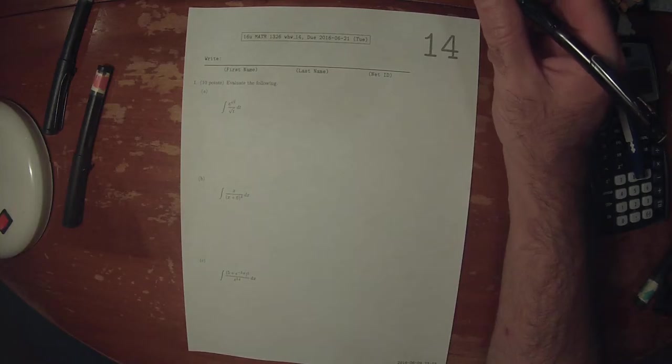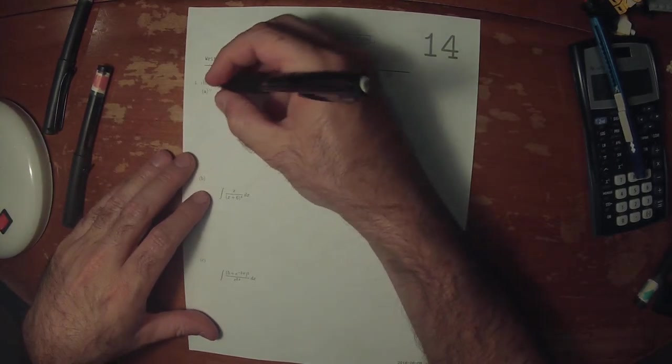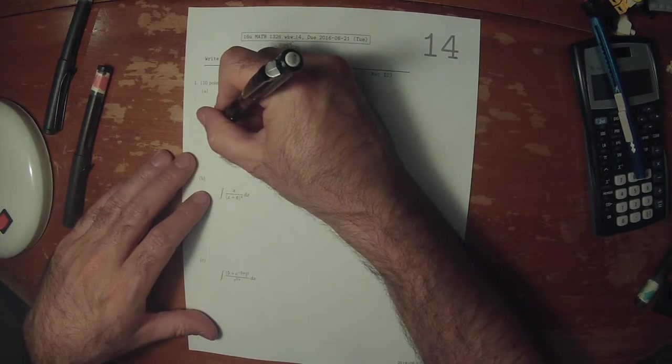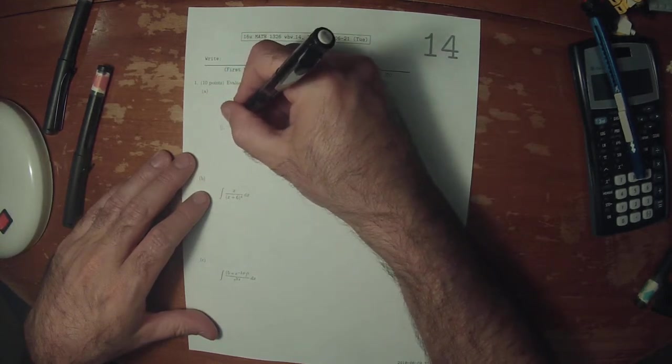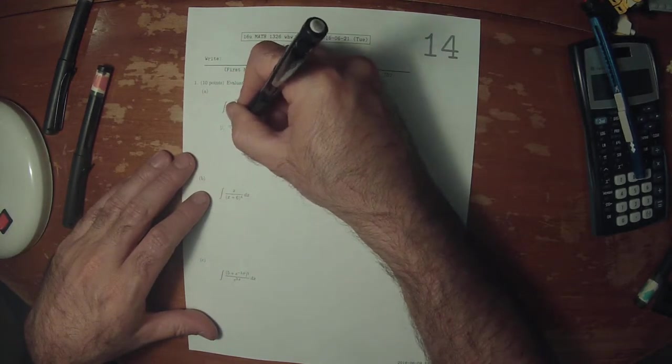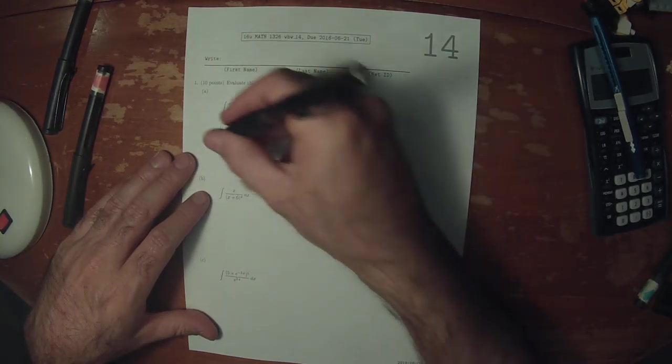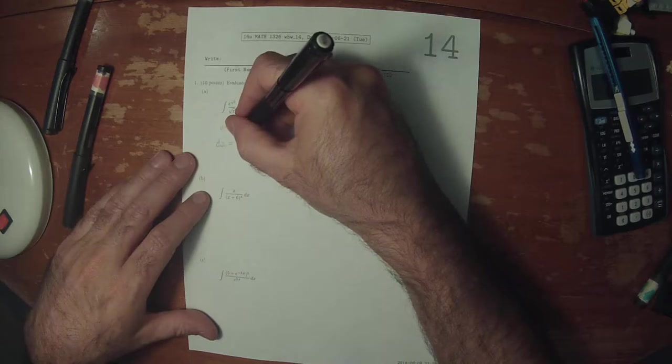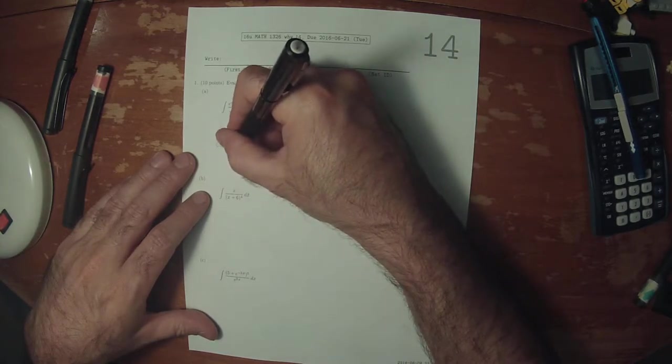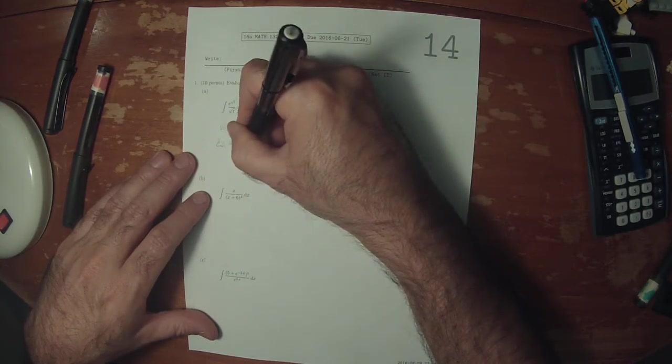So for the first one, the substitution necessary is u equals square root of t. Then du is 1 over 2 square root t dt.